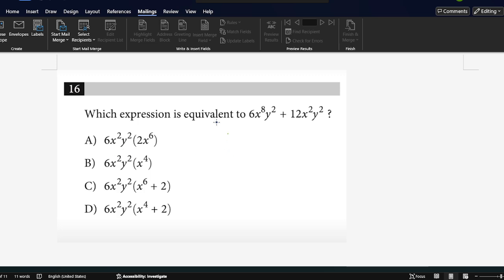So this question, we take a common factor out. So 6 times x squared times y squared plus 12, we can write as 6 times 2 times x squared y squared. Take a common factor out.